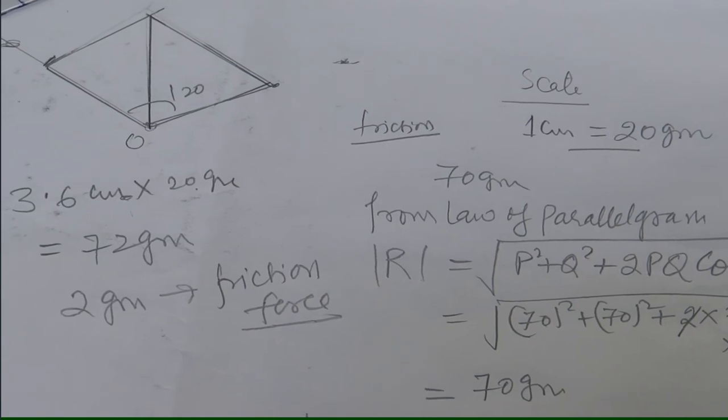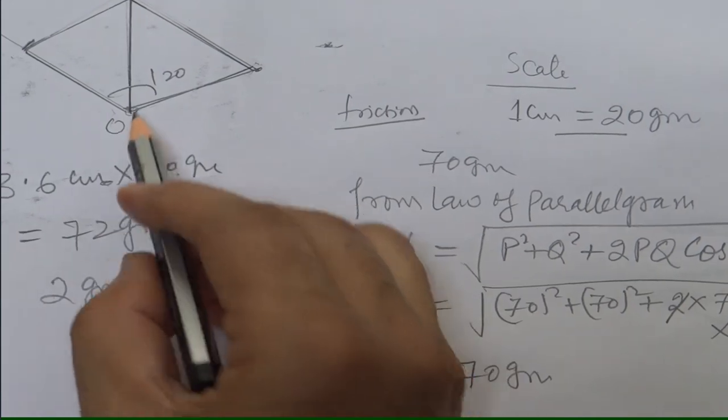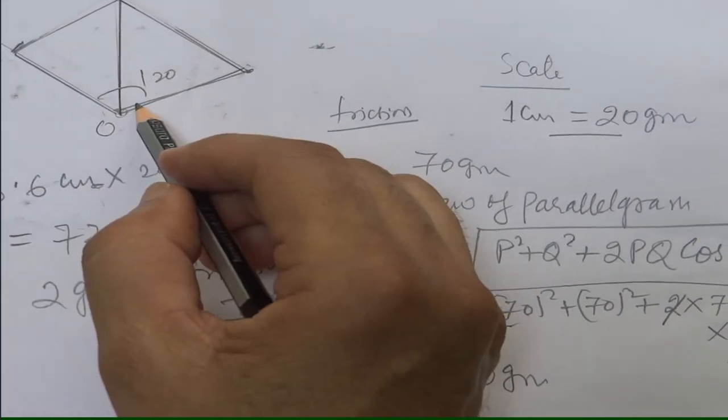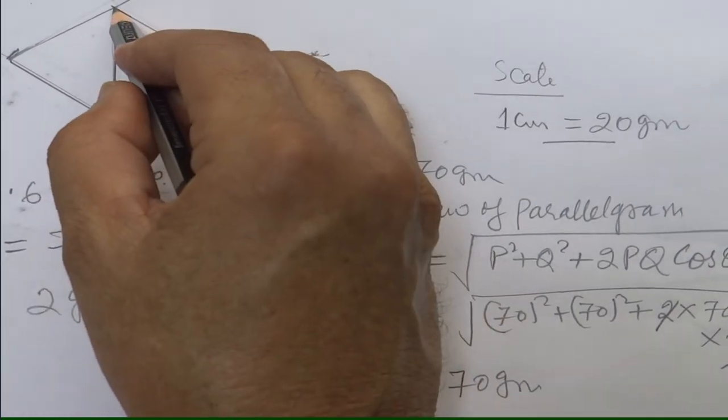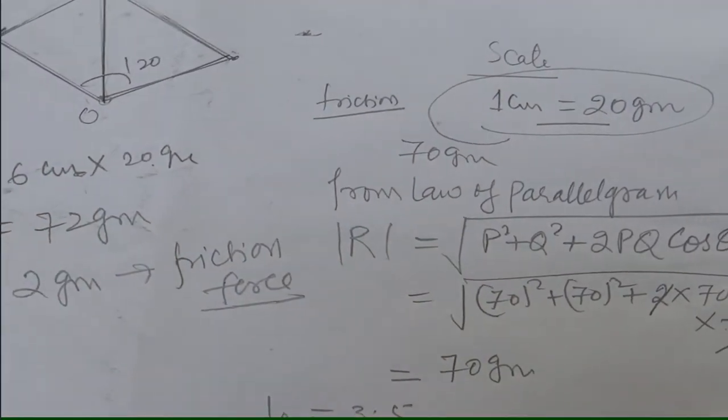That's how you will verify law of parallelogram. But if you want to measure the weight of the body, you can keep 70-70, 100-100, whatever you choose. Draw the figure for parallelogram, find the length of the diagonal, and then calculate from your scale. This will give you the weight of unknown body.